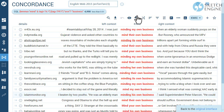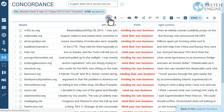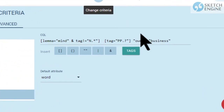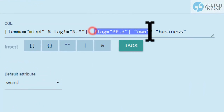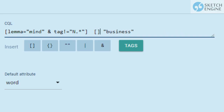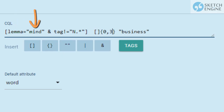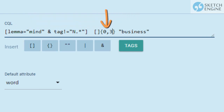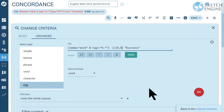To explore more variations inside the phrase, you might try a less specific search. This search would read as: find all word forms of 'mind', not used as a noun, followed by the word 'business', with no token or one, two, or three random tokens in between. This might include some unwanted results, but might also identify some interesting and unexpected ones.